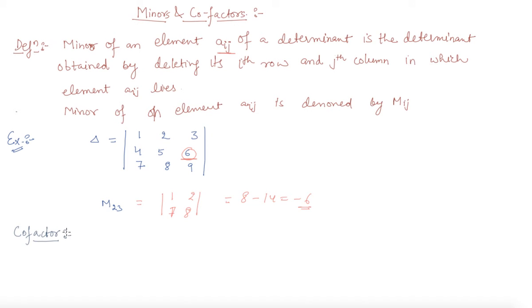The cofactor of an element a_ij, denoted by capital A_ij, is defined by: A_ij equals minus 1 raised to power i plus j times M_ij, where M_ij is the minor of the element a_ij. Let's discuss one example on this.